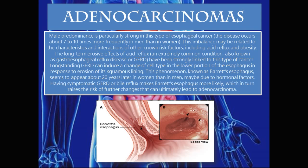Having symptomatic GERD or bile reflux makes Barrett's esophagus more likely, which in turn raises the risk of further changes that can ultimately lead to adenocarcinoma. My diagram at the bottom shows a patient with long-standing GERD, where the constant reflux of acid or bile back into the esophagus causes a change in the cells lining the lower esophagus. The cells that line the stomach start lining the esophagus — replacing squamous epithelial cells with columnar epithelial cells — and this process is called Barrett's esophagus, which is an extremely dangerous pathology because it predisposes patients to the development of adenocarcinomas.